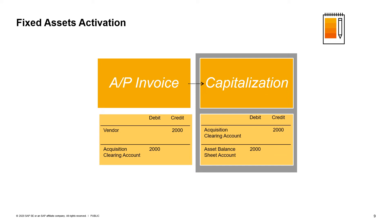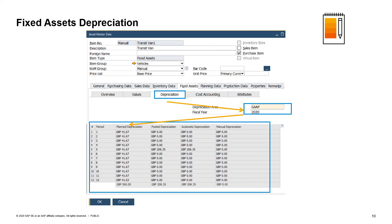Note that the asset value date is set by default to be the same as the AP invoice posting date, and this date can be changed before adding the AP invoice to update the capitalization asset value date. Depreciation is used to write off the cost of an asset over its useful lifetime, representing the reduction in the book value of an asset for both tax and accounting purposes. Depreciation would be included within the company expenses. The system predicts the yearly expected depreciation rate according to the asset master data definitions: asset class, depreciation area, account determination, and depreciation type.